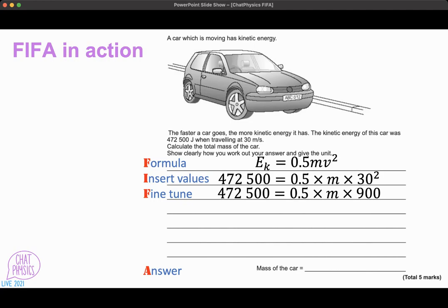So the fine tune is what we have to do to get to the final answer. In this case, the first step I've taken in the fine tune stage is I've worked out what 30 squared is. The next step is I've simplified it by working out what 0.5 times 900 is.